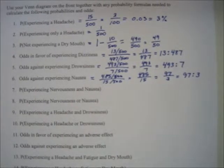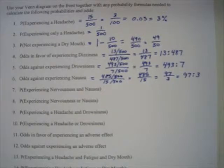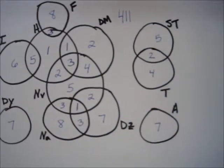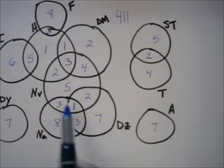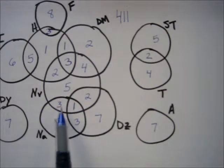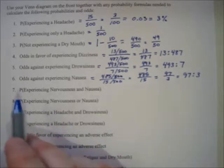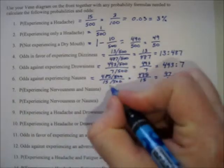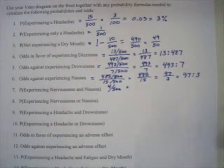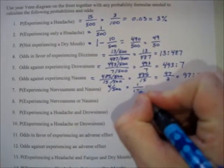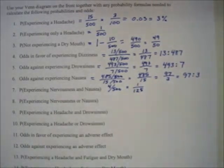Problem 7: probability of experiencing nervousness and nausea. Going back to the Venn diagram, nervousness is this circle and nausea is this circle. You want the intersection — 3 and 1, so 4 people had both. The probability is 4 out of 500, which reduces to 1 out of 125.